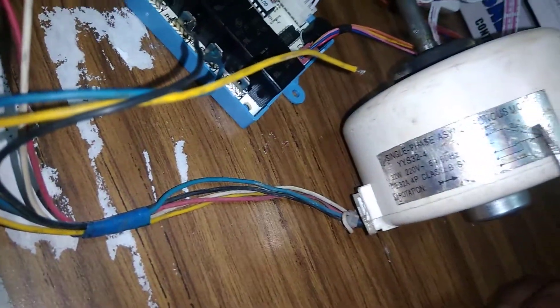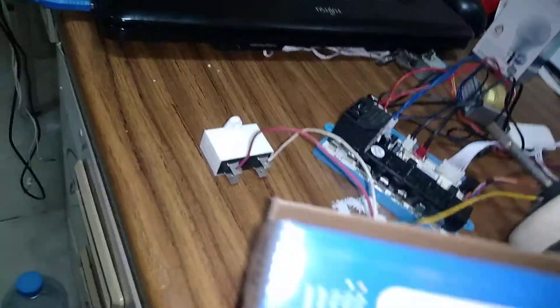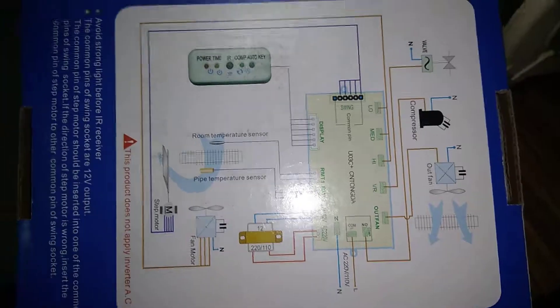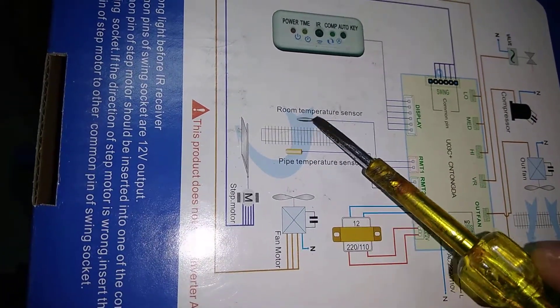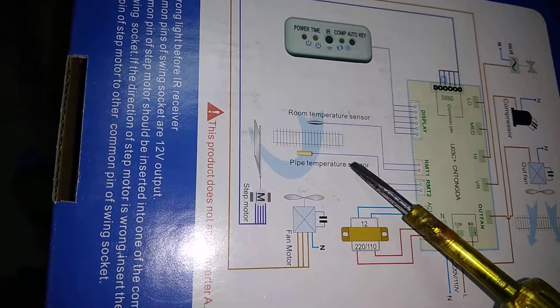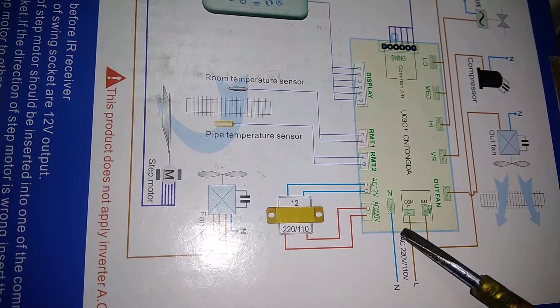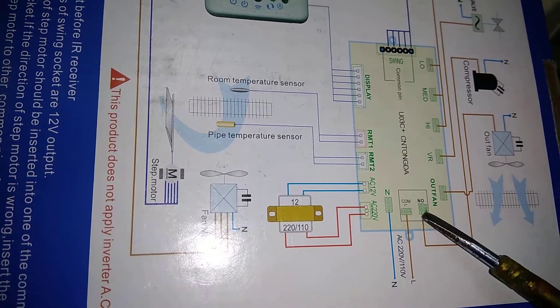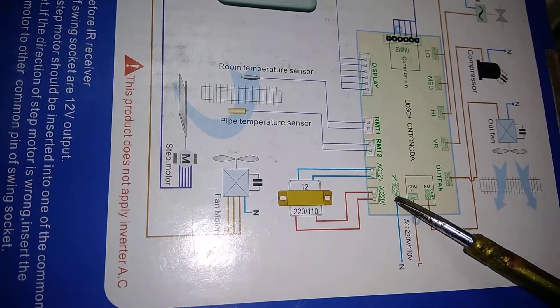Once finished, it is a simple connection. But first, you need to read the diagram — if you can read this diagram, there is no problem. Now look at the back side of this board. There is also a room temperature sensor, pipe temperature sensor, and a common terminal. Common means the main AC input — phase and neutral input.